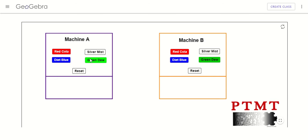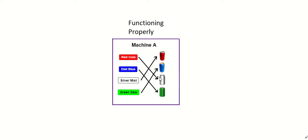Whenever I press the red button, I'm always going to get a silver mist. Whenever I press the blue button, I'm always going to get a green dew. Whenever I press the silver button, I'm always going to get a red cola. And whenever I press the green button, I'm always going to get a diet blue. So machine A is an example of something that is functioning properly because it's consistent. Probably what happened was the person who loaded the sodas put them in the wrong spot, but machine A is functioning properly.